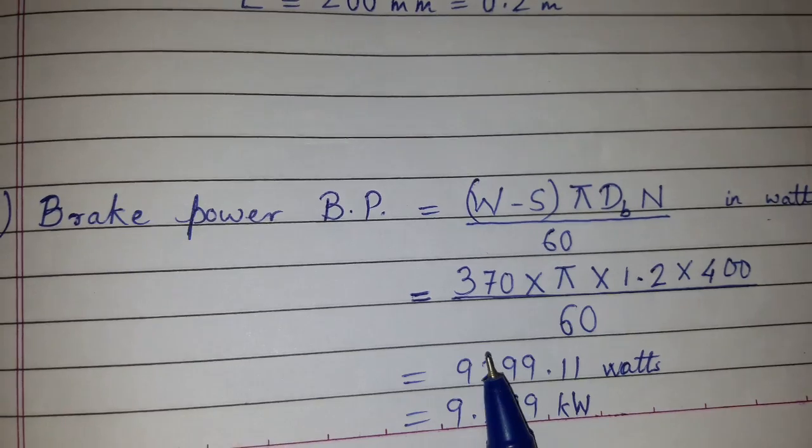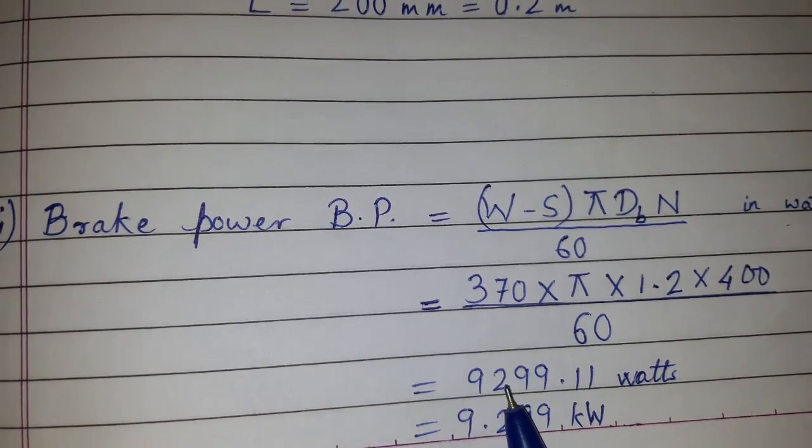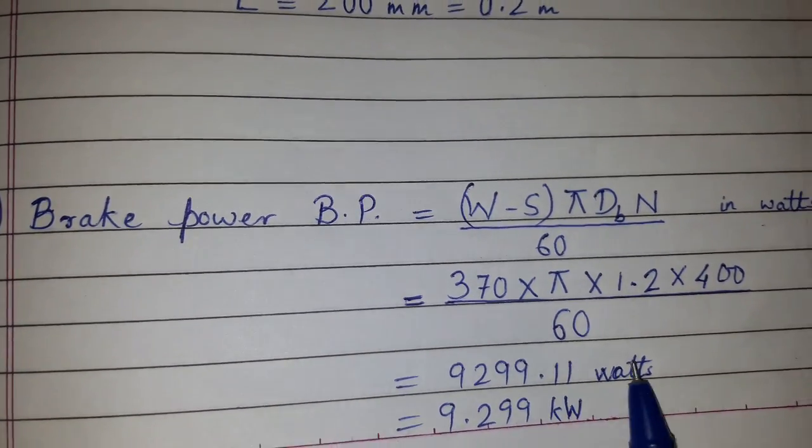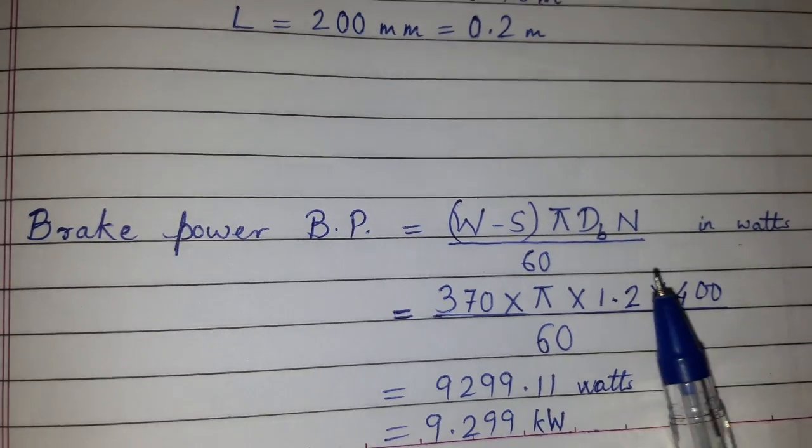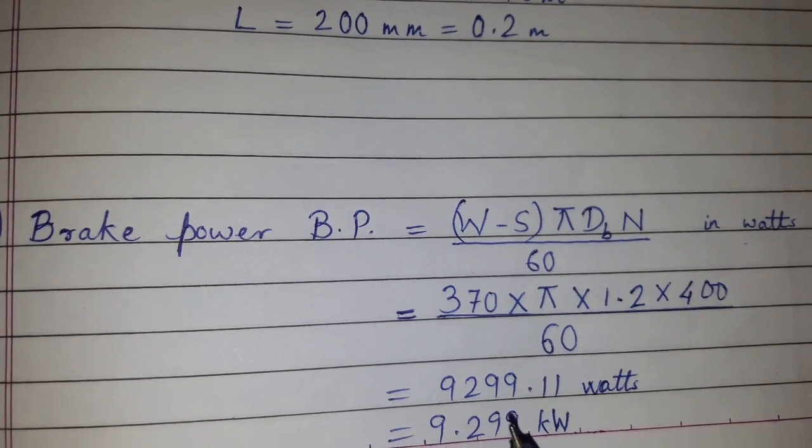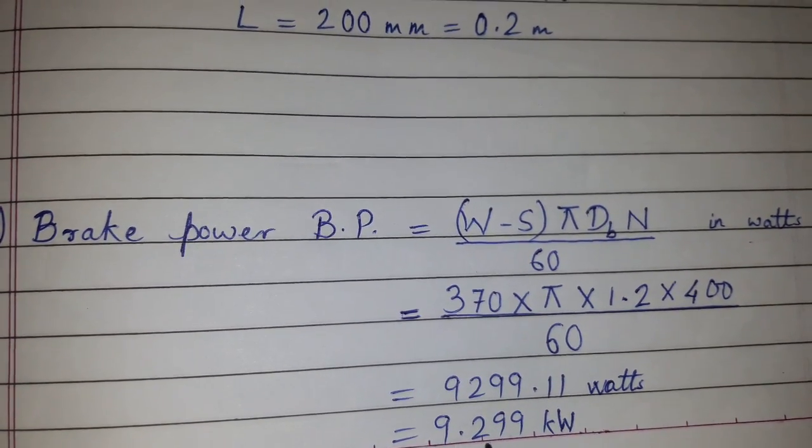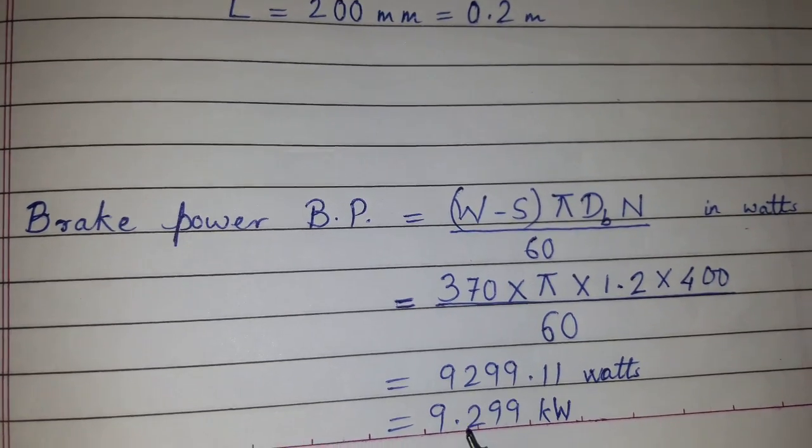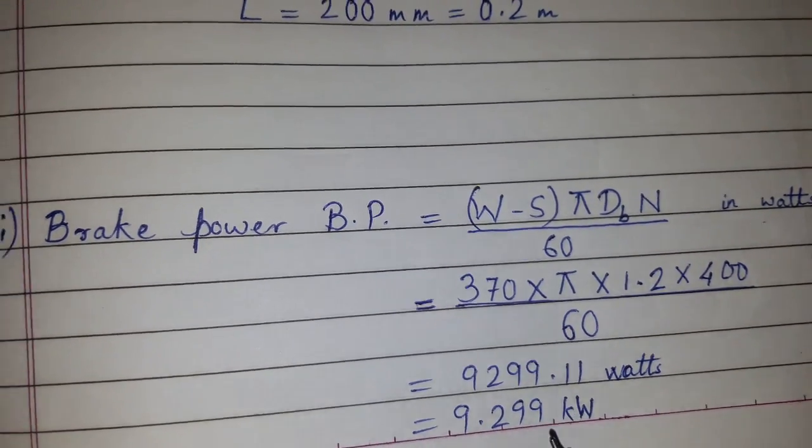So with this we can find brake power that is equal to 9,299.11 Watt. Since the formula gives you the value in Watt, we have divided by 1000, so this is 9.299 kilowatt.